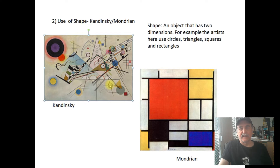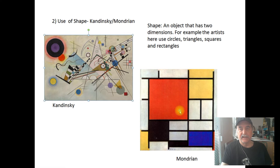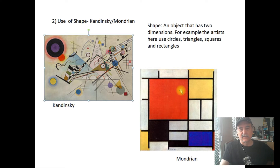Looking at Mondrian on the right — Mondrian started out creating artwork with nature, trees, and houses, but as he developed as an artist he moved into creating more geometrical shapes. He actually believed that if people used this type of design in their houses it would positively influence their lives. He used mostly squares and rectangles of different colors.